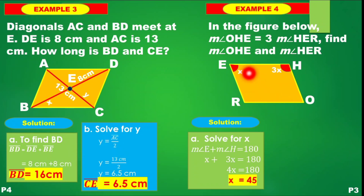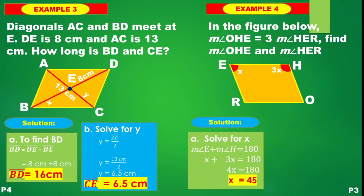This means the measure of angle HER is equal to 45 degrees. So HER = 45 degrees.